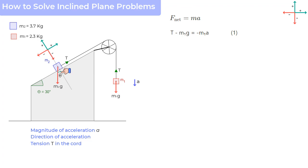So if this is angle theta, then simple geometry tells us that this should also be angle theta. And therefore, the component of force m2g in this direction would become m2g cos theta. And in this direction, it will be m2g sin theta.